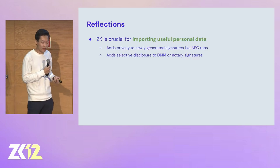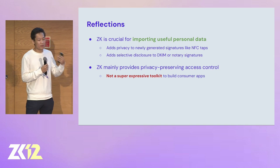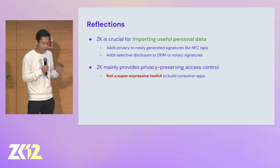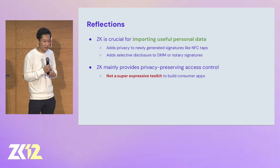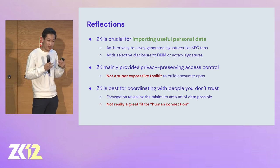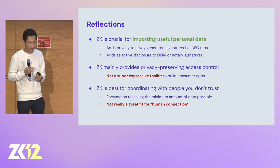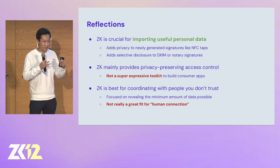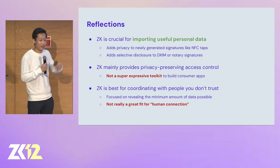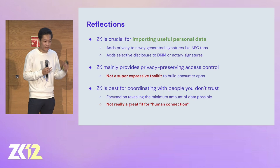Some quick reflections on ZK: it's useful for importing personal data in a verifiable manner. But largely speaking, ZK is still limited within this social app use case — it doesn't allow full expressivity and it's largely a single-player thing; I'm proving things about myself to other people. ZK is centered around minimizing the amount of data that you share, whereas something like MPC and FHE really allows you to maximize the data you share and look for more connection, because it can be done in a safe and privacy-preserving way.